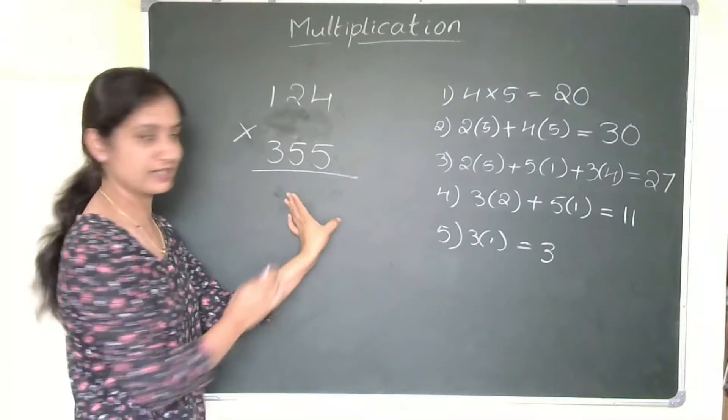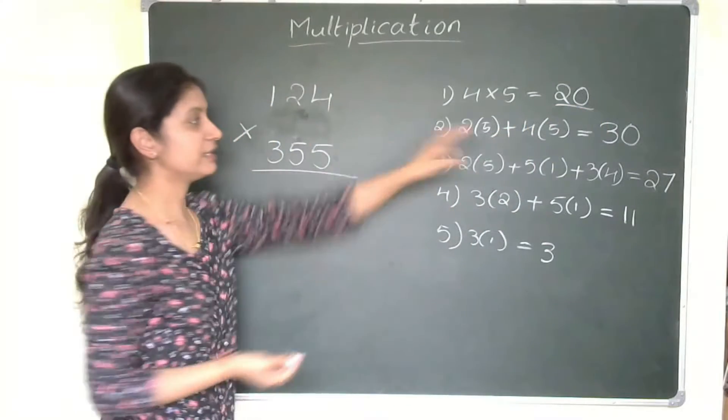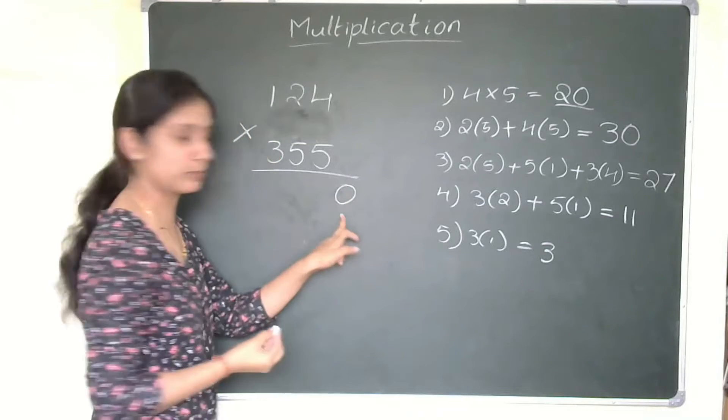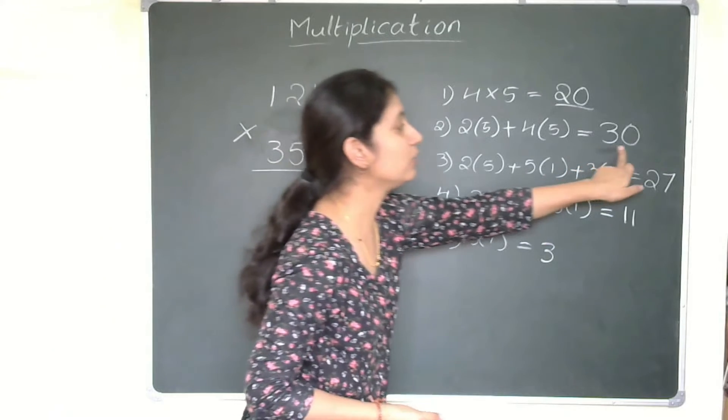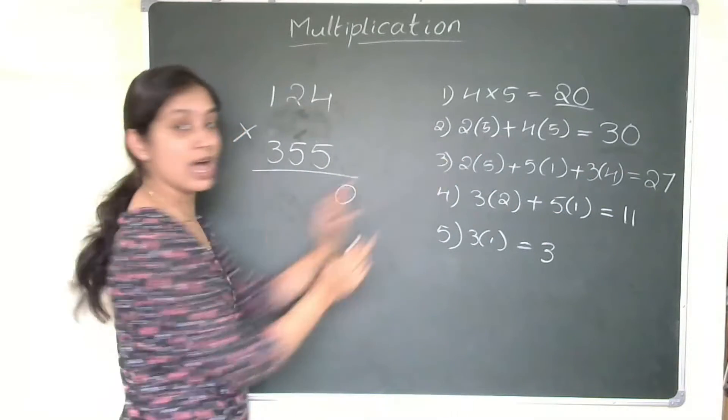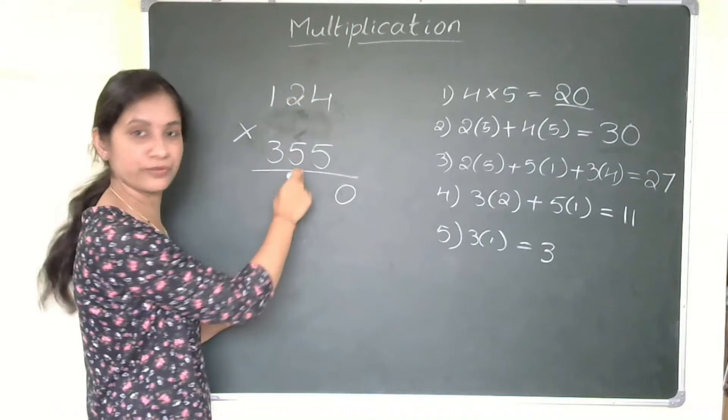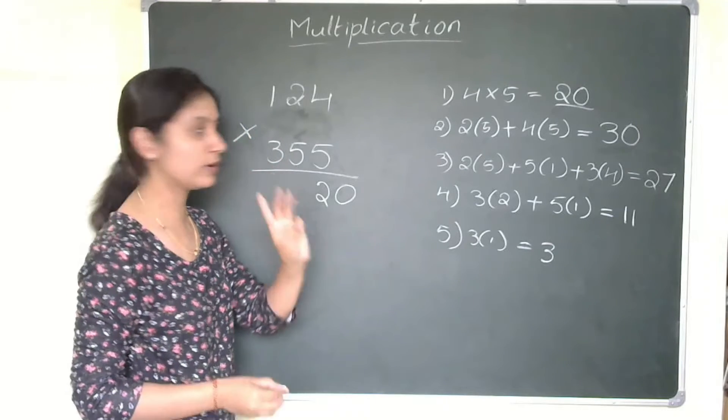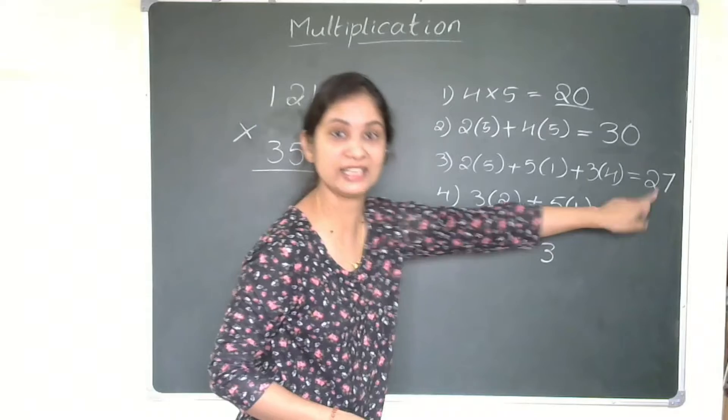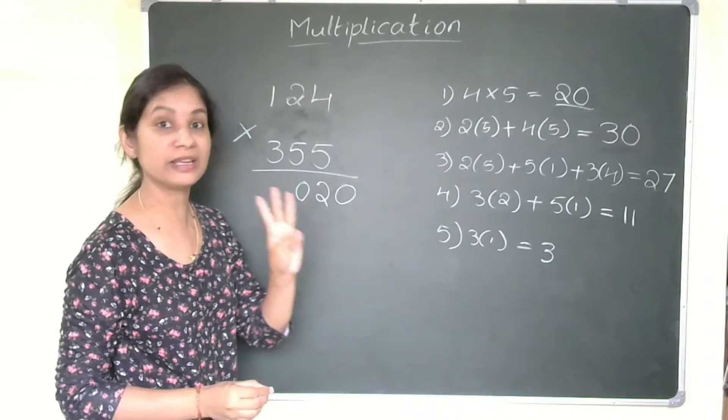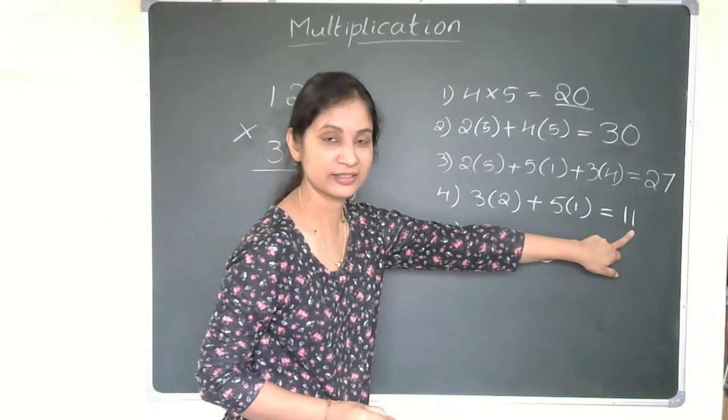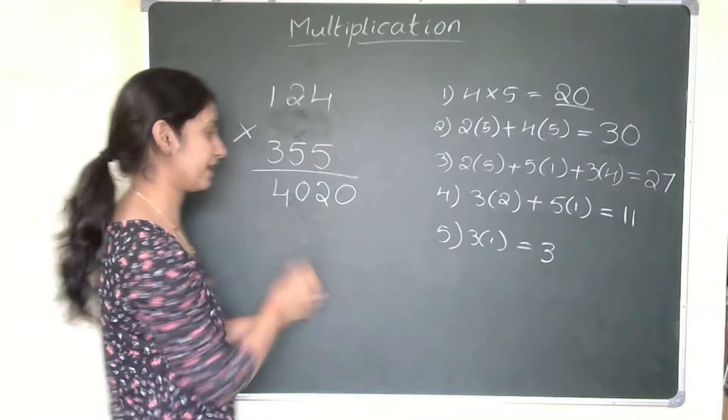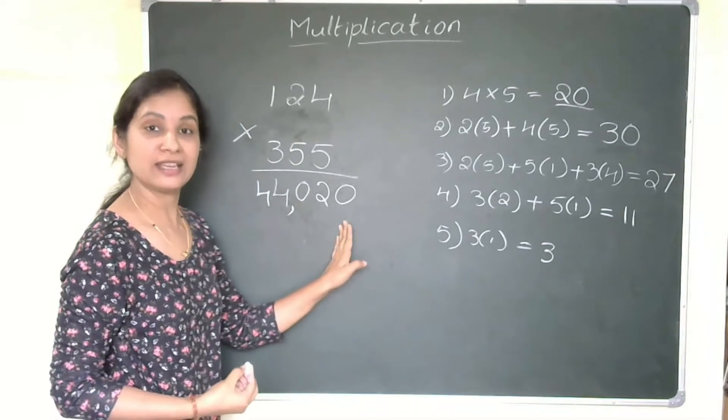Now, you need to write the final answer here. So our first answer is 20. That means the unit place answer. After doing 4×5 is 20, you are writing zero in unit place. Two is carryover. That two is carryover, so you can directly add to this number 30. Because the 30 is the answer for 2×5 plus 4×3. So you add this two to 30, that becomes 32. So I will write two. Then three is carryover. Three plus 27, that is 30. So I will write zero. Three is carryover. Now in 30, that three plus 11, that becomes 14. So four is here. One is carryover. That one plus three gives you four again. 44,020 is the final answer.